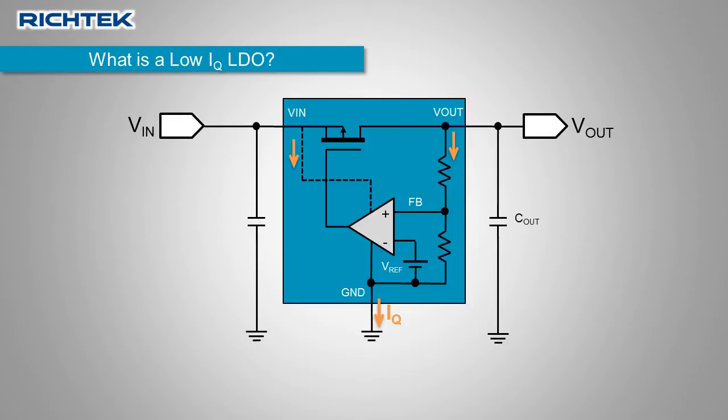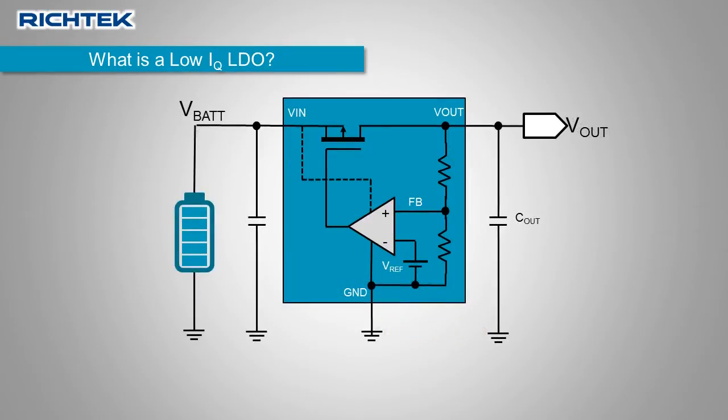The quiescent current of standard LDOs ranges from 25 microamps up to 1 milliamp. In applications that need to run from batteries, this can be too high because even if the LDO output has zero load current, the battery is slowly drained by the LDO quiescent current.